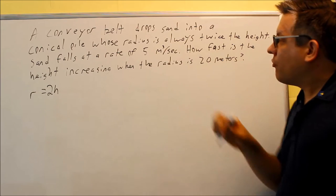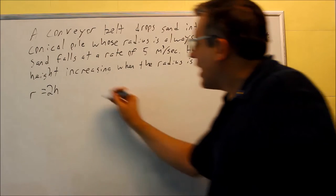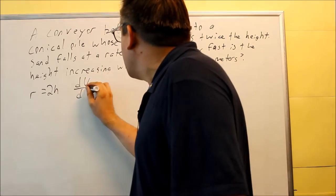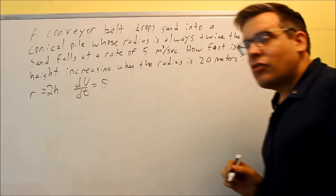Sand falls at a rate of 5 cubic meters per second. What is that? That is dV/dt. The rate that the volume is changing with respect to time, that's given as 5.